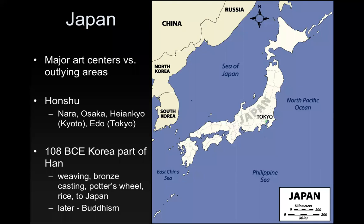The main island of Japan is Honshu, and most of the cities we're going to talk about — like Nara, Osaka, Haiyan-kyo which is modern-day Kyoto, and Edo which is modern-day Tokyo — are on this island.